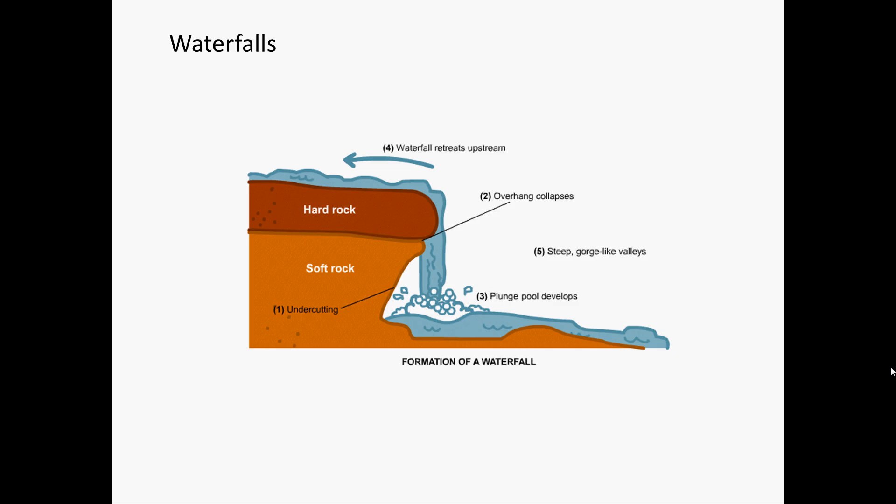There are 5 steps to the formation of a waterfall. Step 1: The soft rock is eroded faster than the hard rock. Step 2: The weight of the hard rock gets too heavy and the overhang collapses.